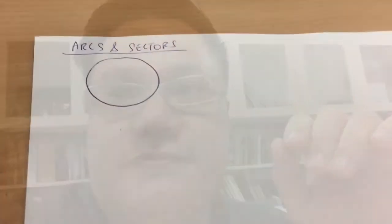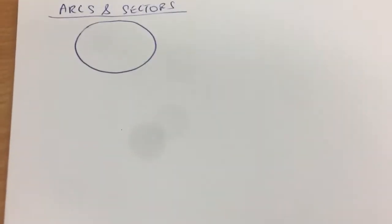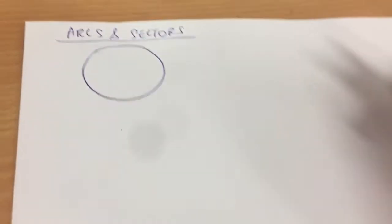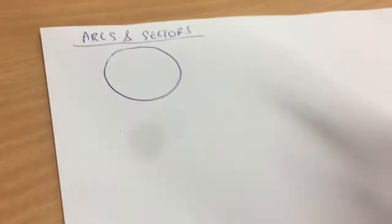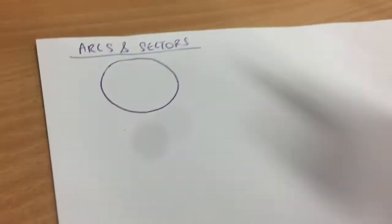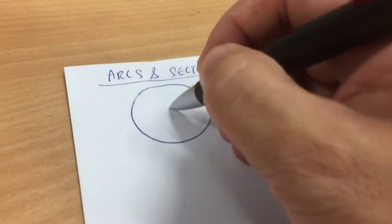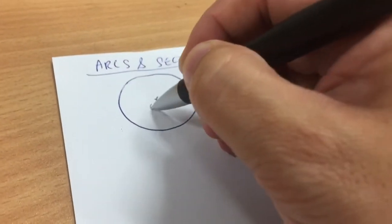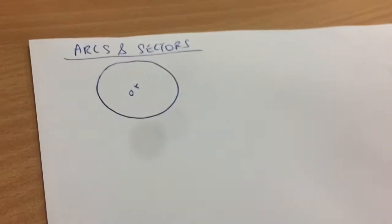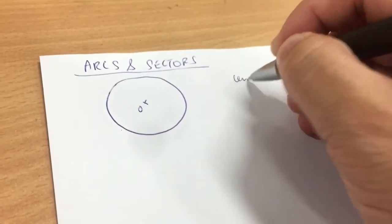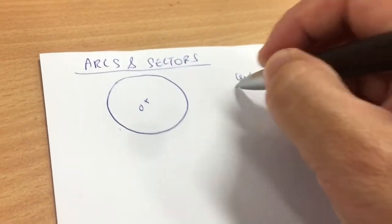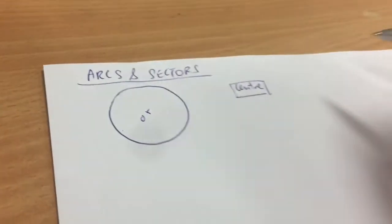I'll split into two parts. So the first part, we'll just talk about the terminology — all the technical jargon. So what you see here is a circle. The point right in the middle of the circle, we call it the center of a circle. All this technical jargon, you must know: center.